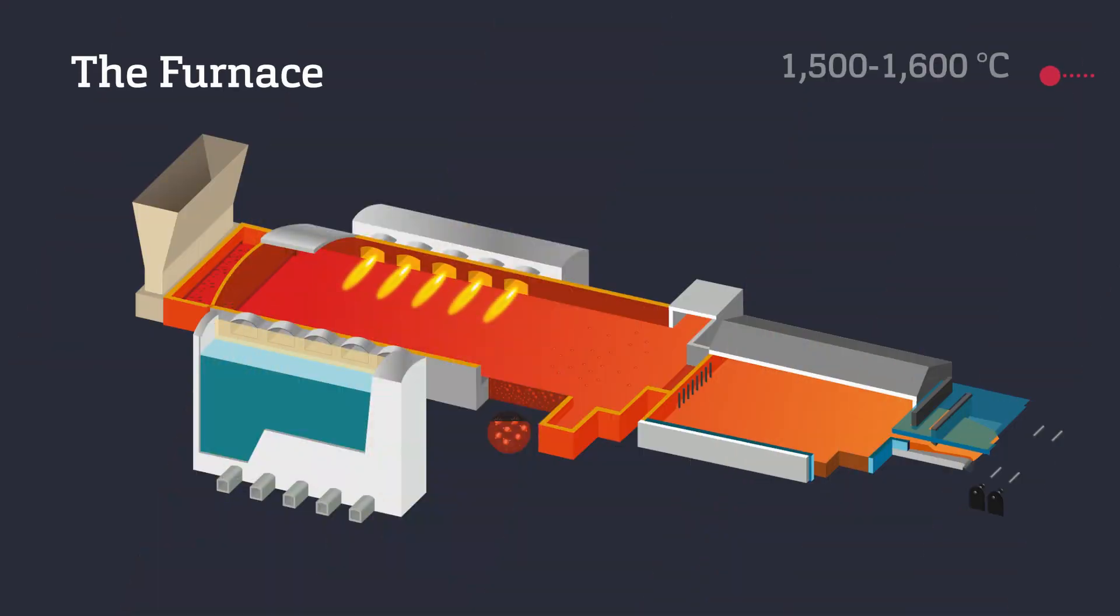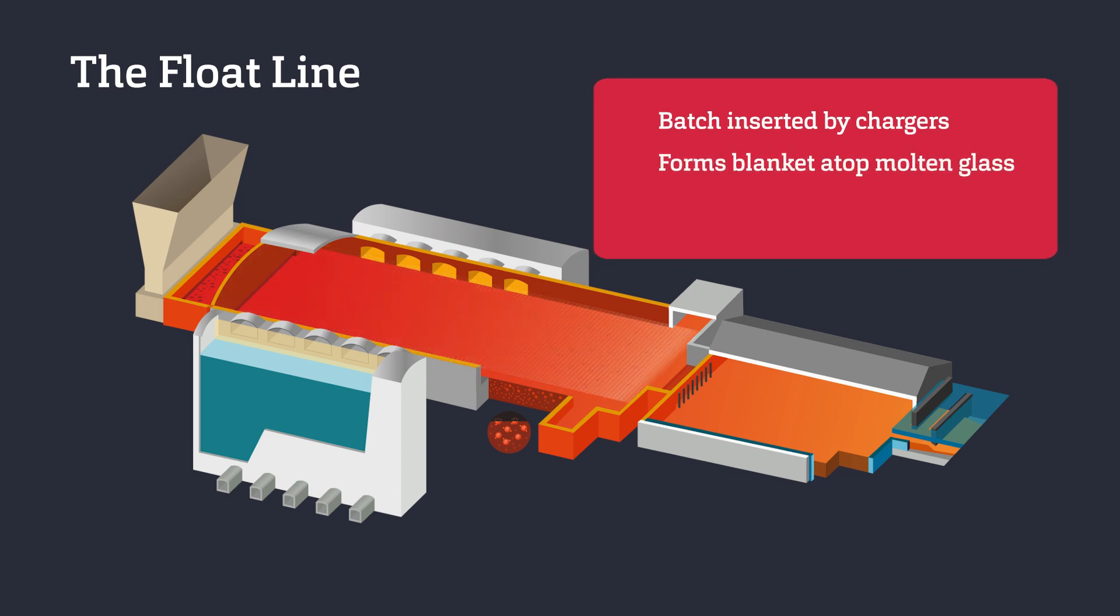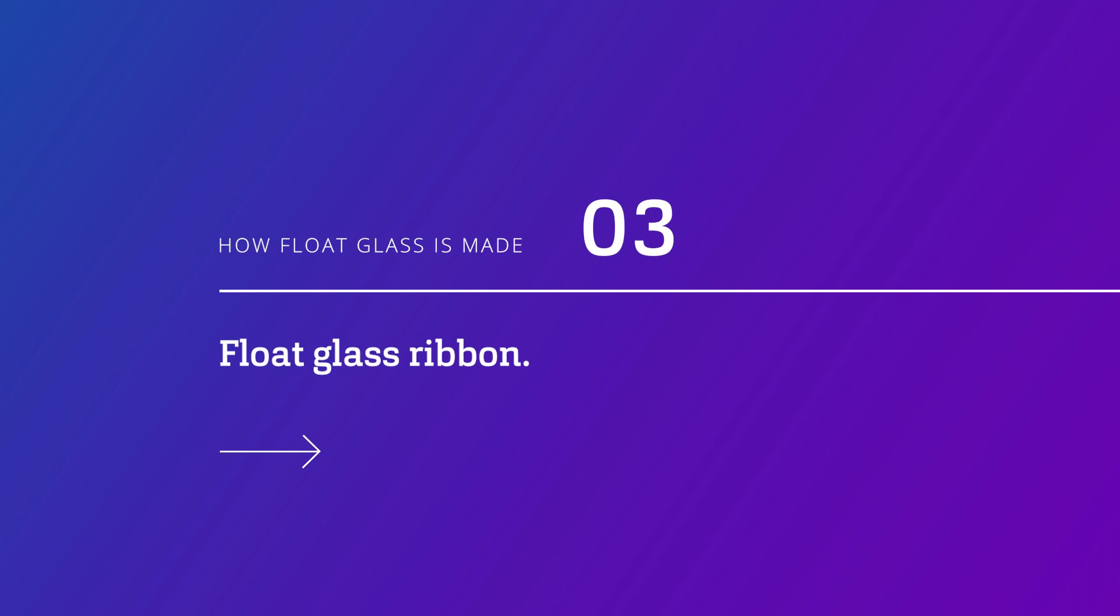The melting zone of the furnace operates at approximately 1500 to 1600 degrees Celsius or 2700 to 2900 degrees Fahrenheit. Upon insertion by the chargers, the batch material initially forms a blanket atop the molten glass already within the furnace.